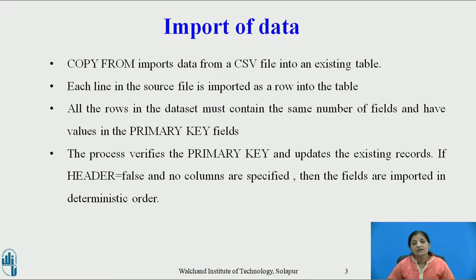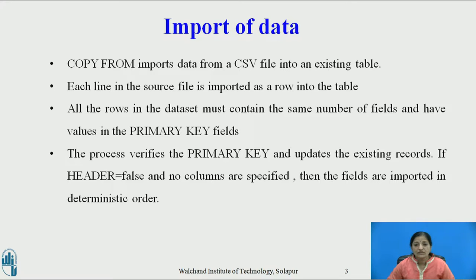Data can be imported from a CSV file into an existing table using the COPY FROM command. Each line in the source file is imported as a row into the table. All rows in the dataset must contain the same number of fields and have values in the primary key fields. This process verifies the primary key and updates existing records. One important option is the header — if header is set to false, then when you display the content of the table after importing, you won't find the header row at all.